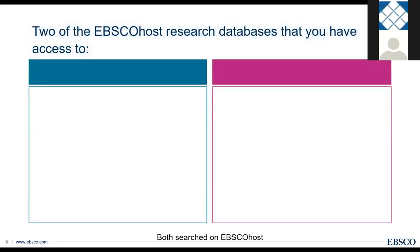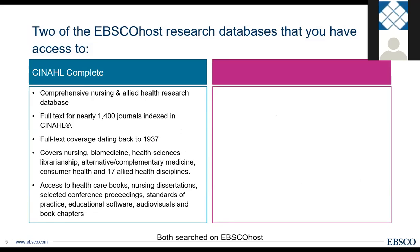In this session we're going to focus on two research databases. First, you have access to CINAHL Complete — the Cumulative Index to Nursing and Allied Health Literature — a very popular and highly regarded database for nursing and allied health. This database has full text for nearly 1,400 journals indexed in CINAHL, with full text coverage dating back to 1937. In terms of subjects, it covers nursing, biomedicine, alternative and complementary medicine, and 17 allied health disciplines, plus more.